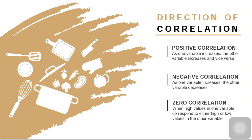It is a positive correlation if the slope points upward or it rises to the right. It happens when one variable increases and the other variable also increases. For example, when you increase your study time, your grades will also increase. If you decrease your study time, your grades will also decrease. As one variable increases, the other variable also increases — that is a positive correlation.